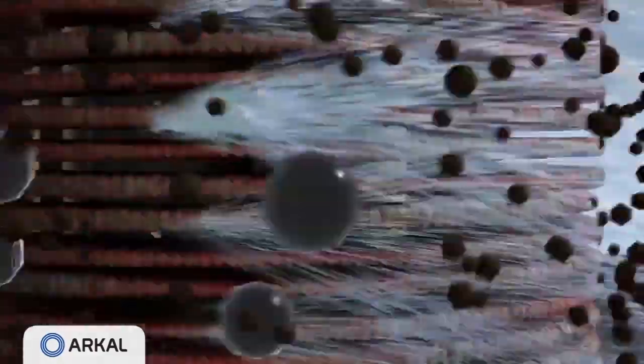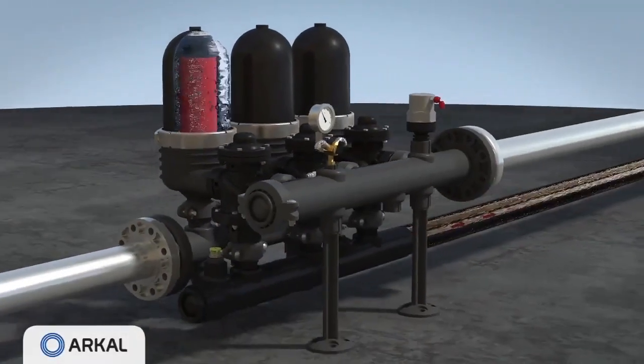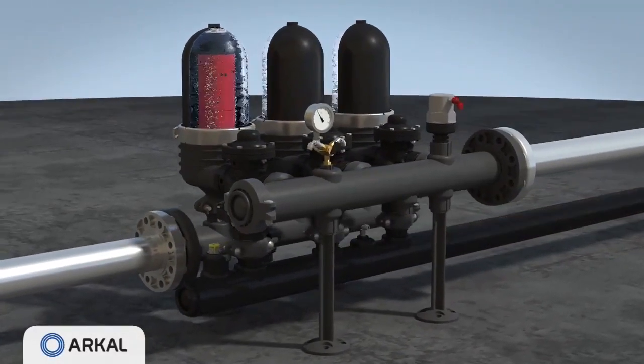High-pressure tangential jets of water are forced through the nozzles, positioned along the spine, causing the discs to spin freely. The trapped solids are dislodged and flushed out the drain.